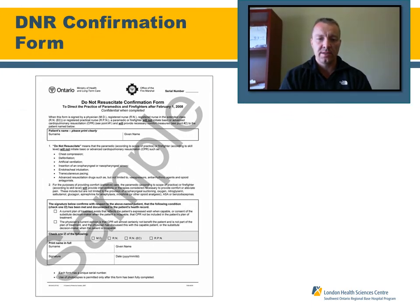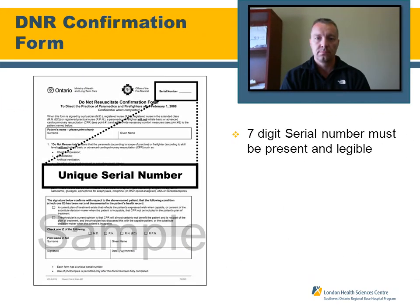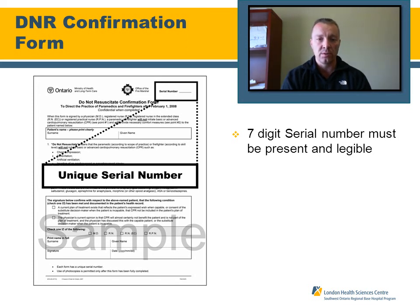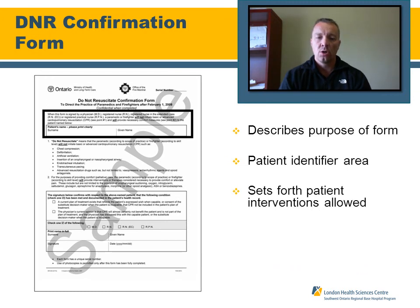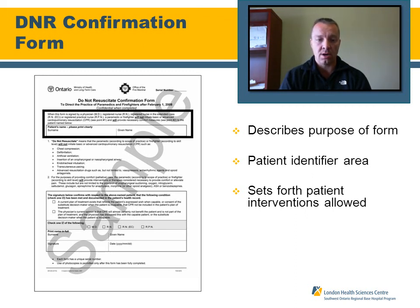Here is a sample of the DNR confirmation form which we'll see out in the field. Once again, the DNR confirmation form has a unique seven-digit serial number in the top right-hand corner. If the serial number is not there or it's unreadable, it cannot be considered valid. Moving down the form, this next section contains the statement which describes the purpose of the form, which enables us as medics to honor this DNR confirmation form.